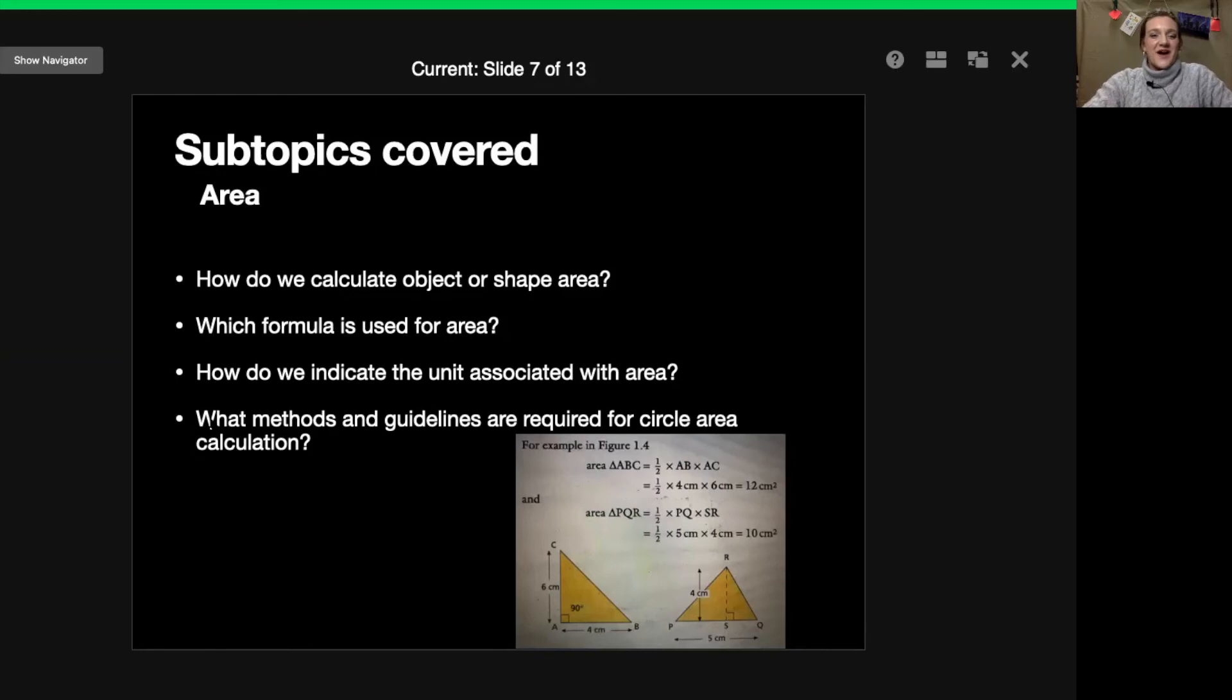So how do we indicate the units associated with area? So because we are calculating and multiplying two sides of an object it means that we will have a square somewhere. And this is usually where the centimeter or the meter squared comes in.